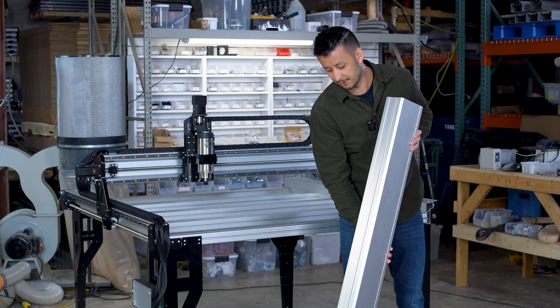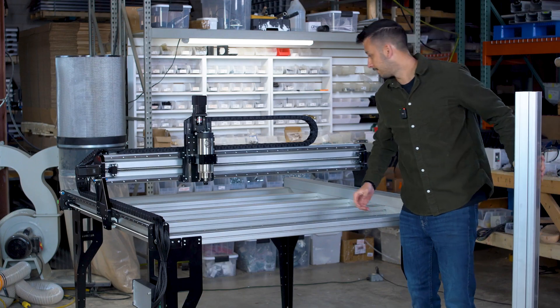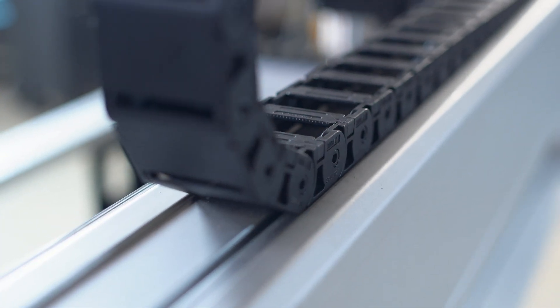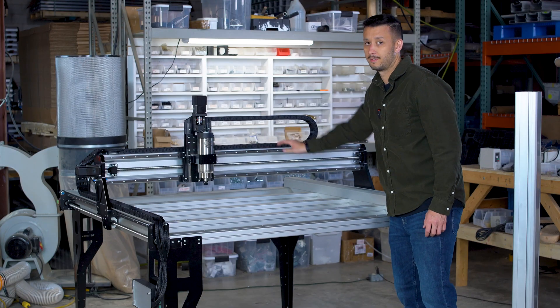The other thing that you will see with the new x-axis rail and y-axis rails is that they now have a little catchment feature for the drag chains so these can no longer wobble out of place. They are actually located into a slot and you don't have to worry about this flopping around anywhere.